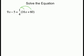For the next equation, we must simplify the right side before moving all the variables to one side. We distribute 1/4: 1/4 times 16 equals 4, and 1/4 times 60 equals 15. So we have 9x minus 5 equals 4x plus 15.